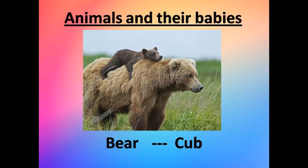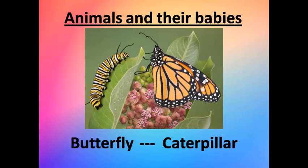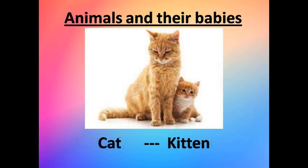The first one is Bear. Bear's baby is called Cub — C-U-B. Next is Butterfly. Butterfly's baby is called Caterpillar. And Cat — cat's baby is called kitten.